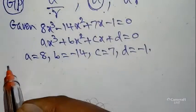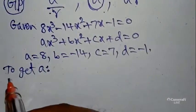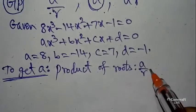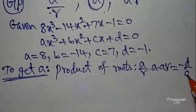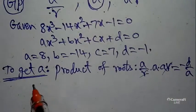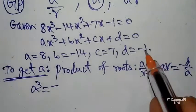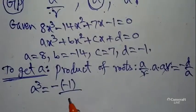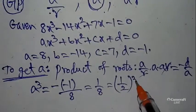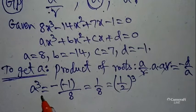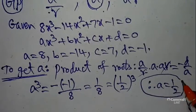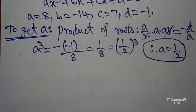To find the value of a in geometric progression, we use the product of the roots. Product of roots: (a/r) × a × ar = −D/A. The r values cancel, giving a³ = −D/A = −(−1)/8 = 1/8. This can be written as (1/2)³, so a³ equals (1/2)³, therefore a equals 1/2.